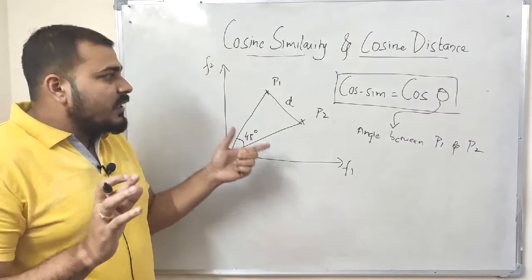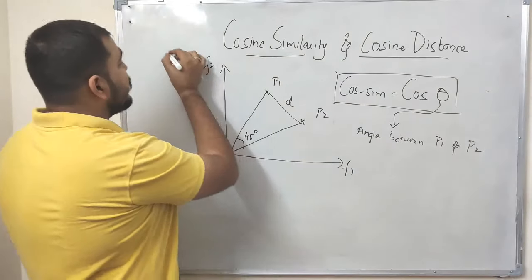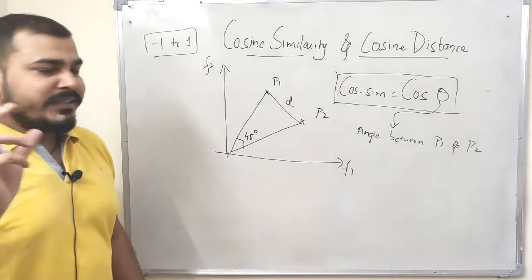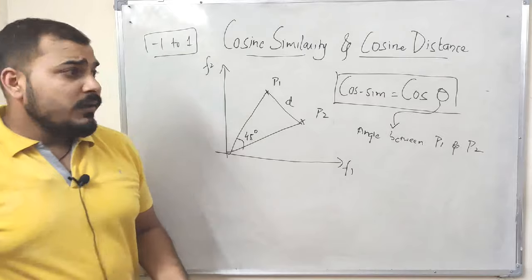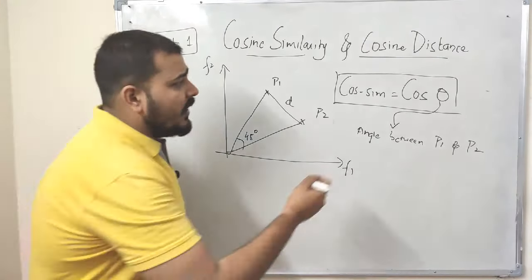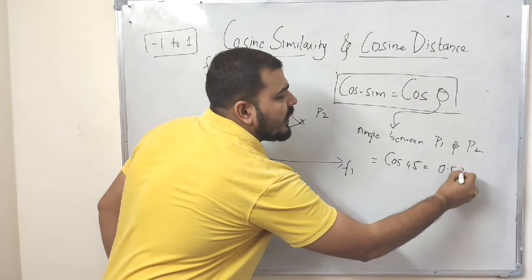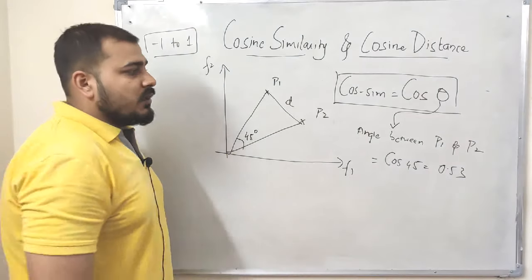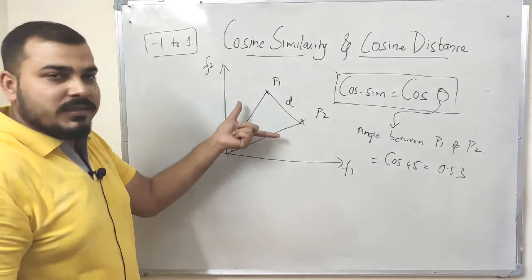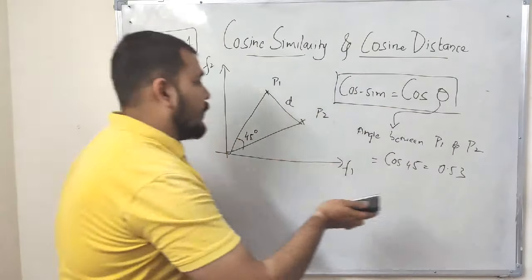Always remember: cosine similarity ranges between minus 1 and plus 1. For example, if the angle between the two points is 45 degrees, then cosine similarity equals cos(45°), which is approximately 0.53 — meaning P1 and P2 are about 53% similar based on the angle created between them.